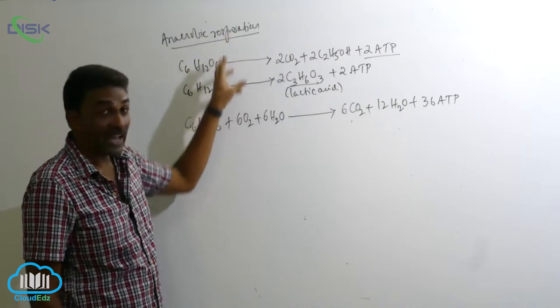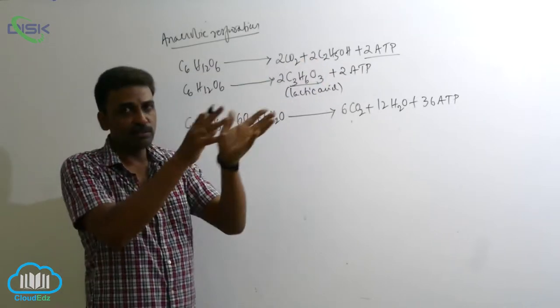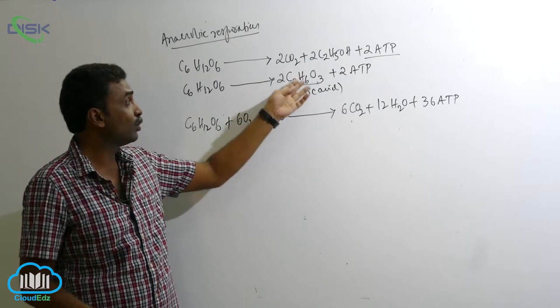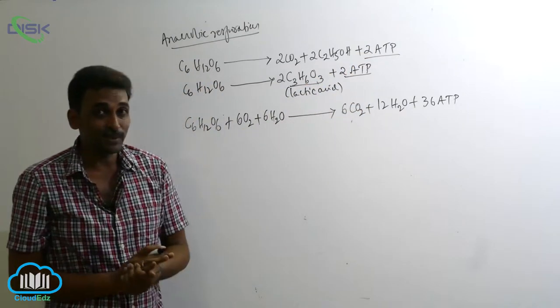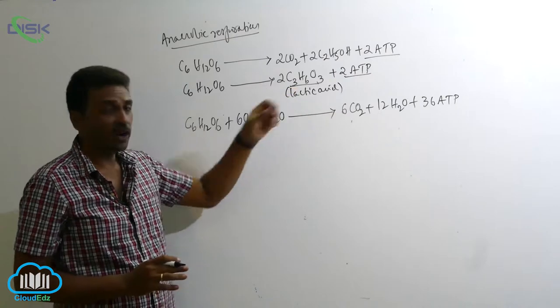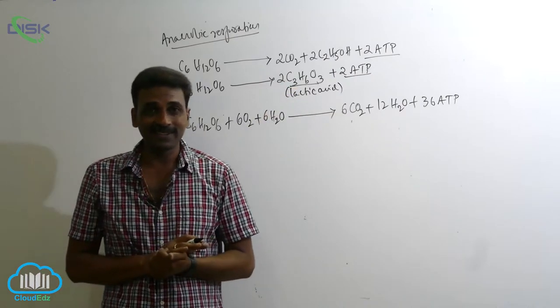So glucose, in the absence of oxygen, is broken down to produce energy. A small quantity of energy is produced, but as a byproduct, lactic acid is synthesized.